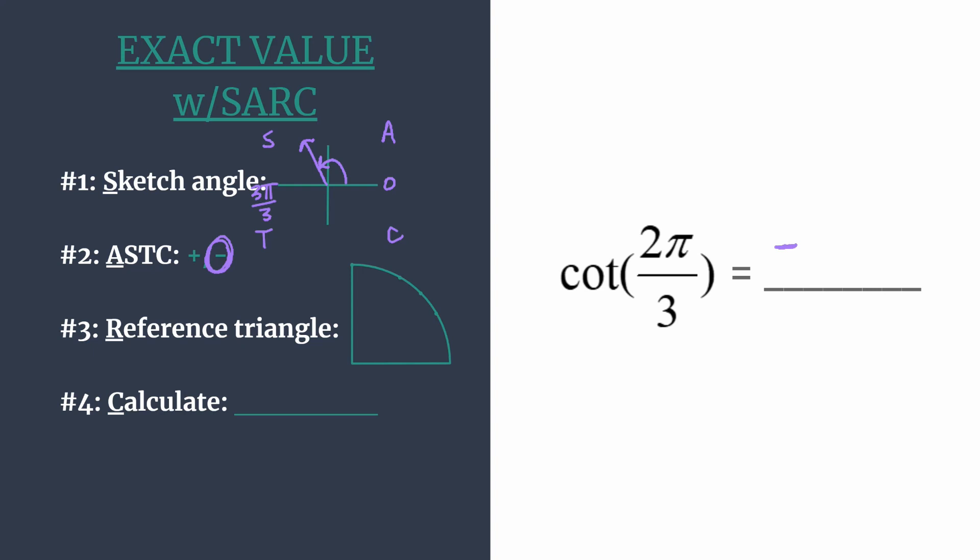All right, now we want to find our reference triangle. And so first we need to find our reference angle, which is simply the amount of rotation from the terminal side of our angle to the x-axis. And we sort of already talked about that earlier. If we've rotated 2π over 3 to get to our terminal side, we must rotate another π over 3 to get to 3π over 3, or π.